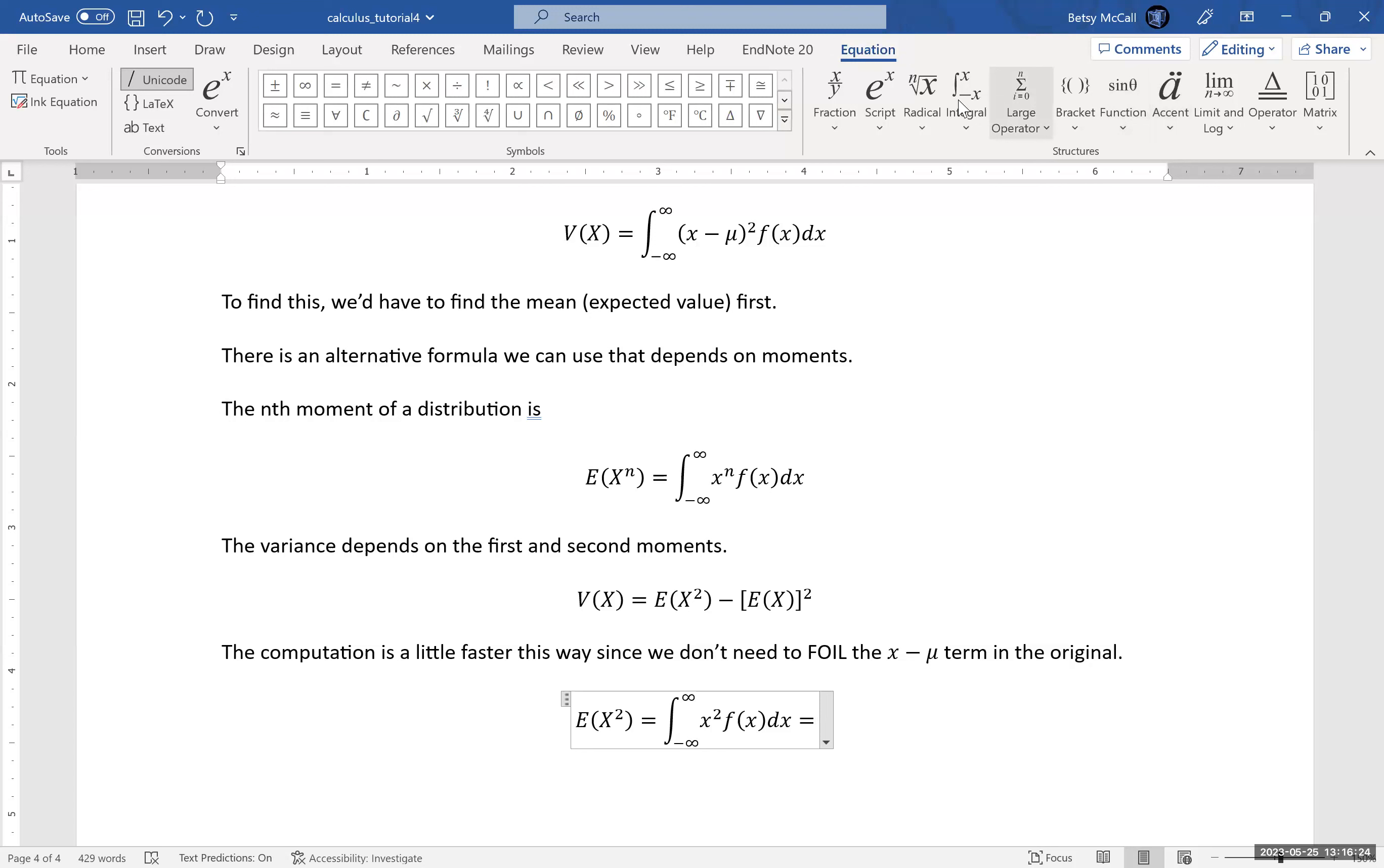My function is going to be the probability function that we were working with earlier. Everything outside 0 to 1 is equal to 0, so we integrate on that region. Then we multiply x² by 12(x² - x³). As when I calculated the expected value, I'm going to move the 12 out front. Then I'm going to distribute my x² to get x⁴ - x⁵.